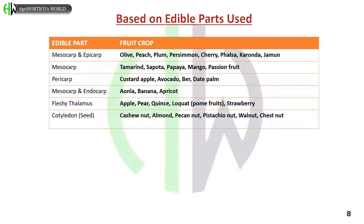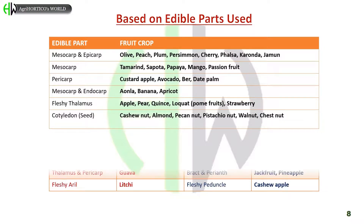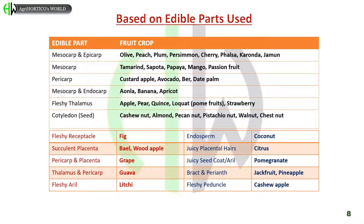Cotyledon or seed part is edible in cashew nut, almond, pecan nut, pistachio nut, walnut, and chestnut. Fleshy receptacle is edible in fig. Succulent placenta in bael and wood apple. Pericarp and placenta in grape. Thalamus and pericarp in guava. Fleshy aril is edible in litchi. Endosperm in coconut. Juicy placental hairs in citrus. Juicy seed coat or aril in pomegranate. Bracts and perianth in jackfruit and pineapple. Fleshy peduncle in cashew apple.